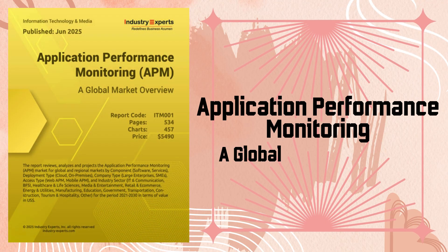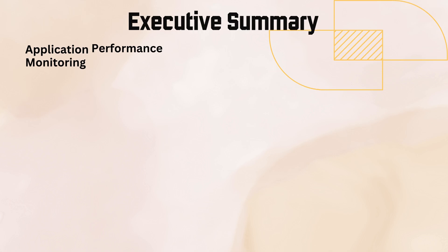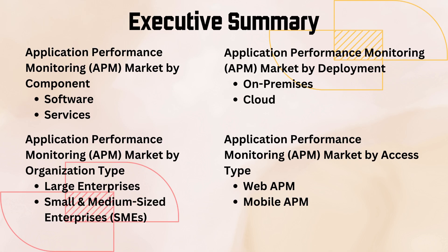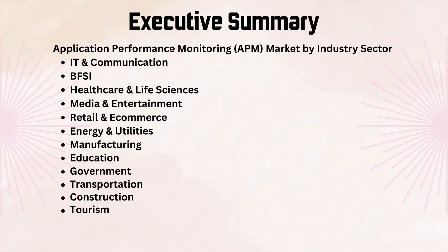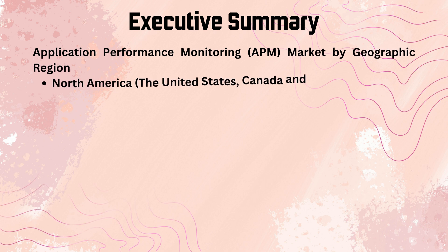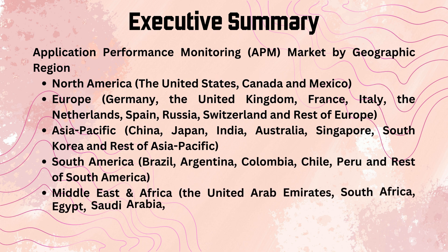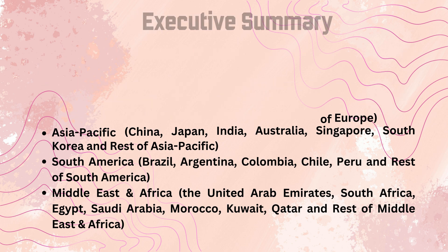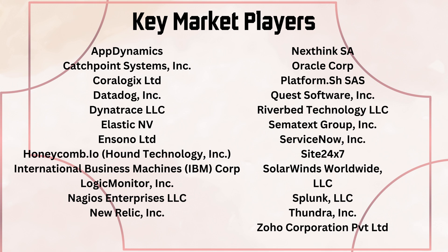Application performance monitoring: a global market overview. The APM market is analyzed by component, deployment, organization type, and access type. This report analyzes the market by industry sectors such as IT and communication, energy and utilities, and manufacturing. Geographic regions covered include the Americas, Europe, Asia, and others. Key market players include AppDynamics, Datadog, IBM, New Relic, and ServiceNow.